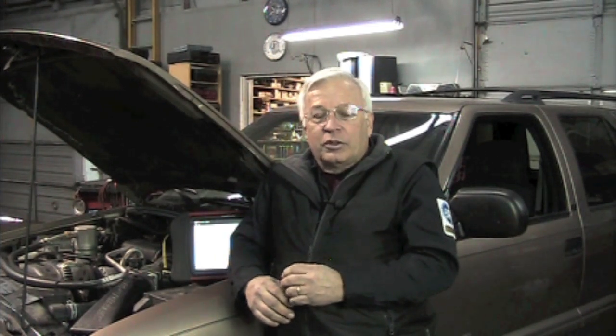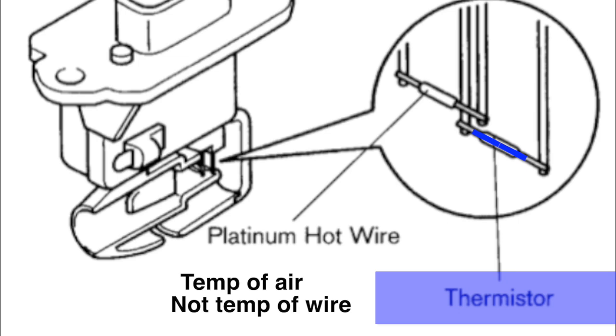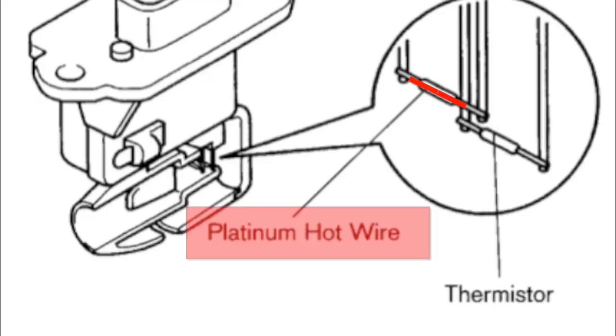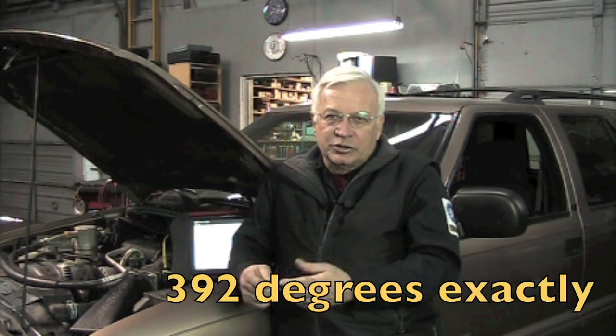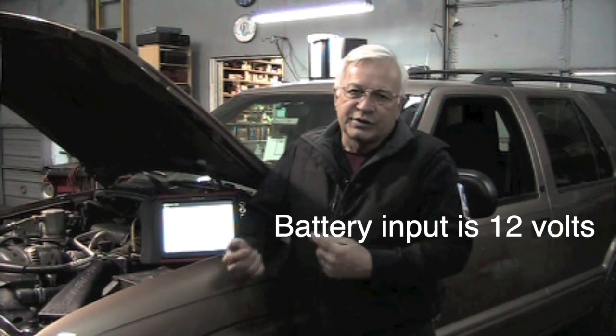Now we're talking about a hot wire sensor, but there are actually two wires inside the mass air flow sensor. One is hot, the other one is cold. The cold wire measures the actual temperature of the air being rushed in through the mass air flow sensor and reports that to the computer. The hot wire is maintained by the PCM at 392 degrees — it's an exact temperature because this is an exact measurement. It uses the voltage off that 12 volt wire and keeps that wire at 392 degrees.